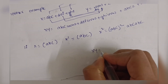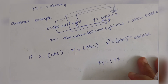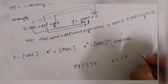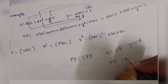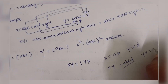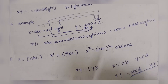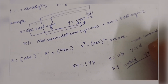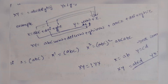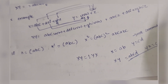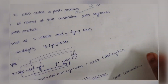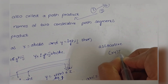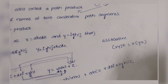Commutativity means X Y is not equal to Y X. For example, if X = A B and Y = C D, then X Y = A B C D and Y X = C D A B; these are not equal. So the path product is not commutative. However, the path product is associative — that is, (X Y) Z = X (Y Z).